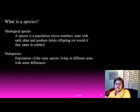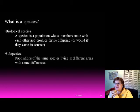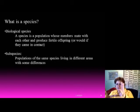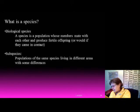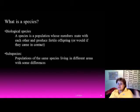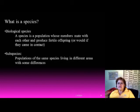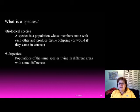Subspecies are populations of the same species living in different areas with some differences — for example, white Europeans in Europe, Asians in Asia, Hispanics in Mexico and Spain. They are populations of the same species living separately, but when they come together everything starts mixing.